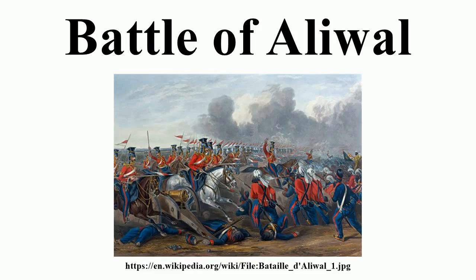The Sikhs had withdrawn to Aliwal on the Sutlej, awaiting reinforcements. On 28 January, Smith advanced against them. The Sikhs had occupied a position four miles long, which ran along a ridge between the villages of Aliwal, on the Sutlej, and Bhundri. The Sutlej ran close to their rear for the entire length of their line, making it difficult for them to manoeuvre and also potentially disastrous if they were forced to retreat.